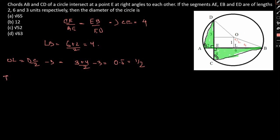Now, in triangle OLB, what we can get is, OB square equal to R square equal to 1 by 2 whole square plus 4 square equal to 65 by 4. So, R equal to root 65 by 2.